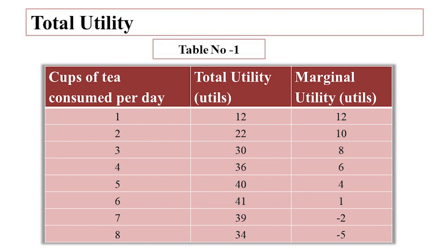The total utility of a good is the sum of utilities derived by a person from each unit of the good consumed. You can see in this table that the first cup of tea gives 12 utils — utils being the unit of measurement of utility. When he takes the second cup of tea, his total utility rises to 22 utils. The total utility is the sum of utilities from a given number of units, so the second cup added only 10 utils.